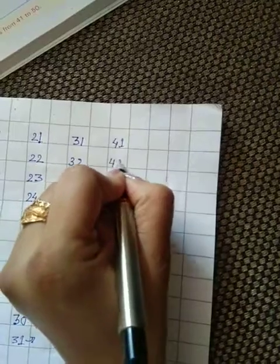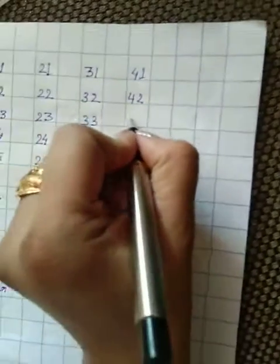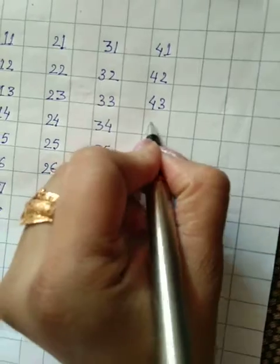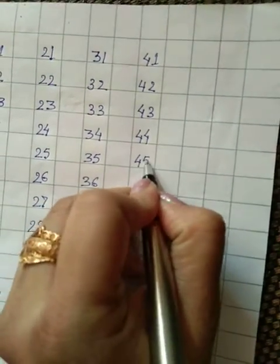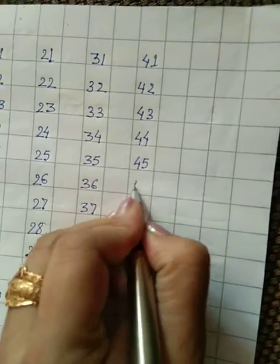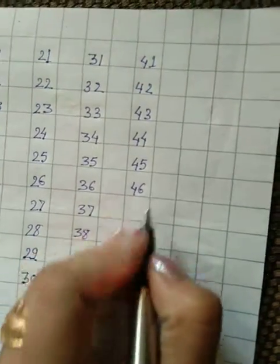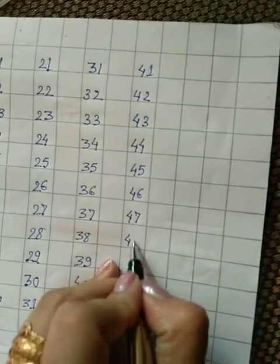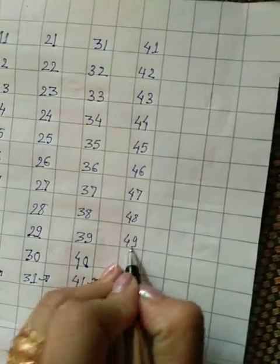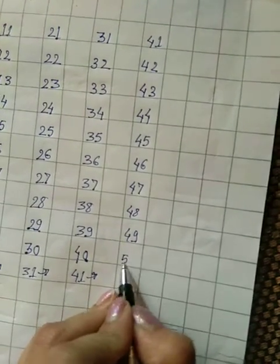4, 2, 42. 4, 3, 43. 4, 4, 44. 4, 5, 45. 4, 6, 46. 4, 7, 47. 4, 8, 48. 4, 9, 49. And then 5, 0, 50. 9 ke baad 0, 4 ke baad 5.